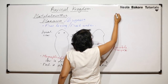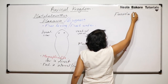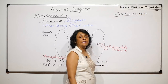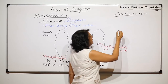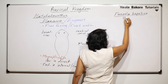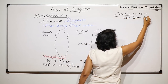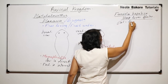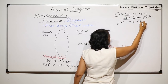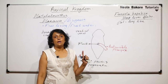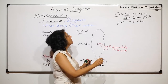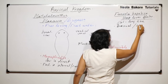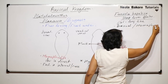The next one is Fasciola hepatica. They are commonly called flukes, and this is known as the sheep liver fluke. The body is flat and leaf-like. Flukes can be bisexual or hermaphrodite.